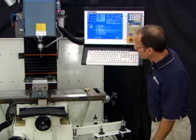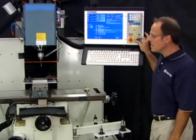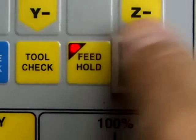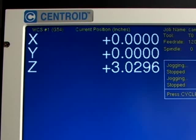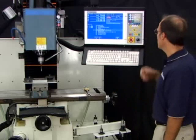Spindle turns on. Z-axis is coming down. Let's hit the feed hold button. Let's check that out. DRO says about three inches. Quick visual check. Three inches is looking pretty good.